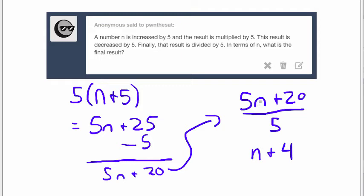That's going to be n plus 4. Because when we divide the whole thing by 5, we divide the 5n by 5 and the 20 by 5. So we end up with n plus 4.